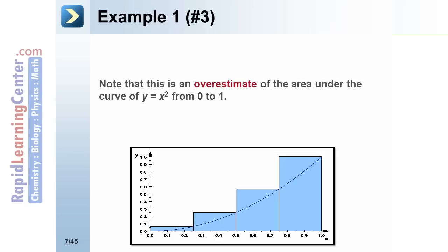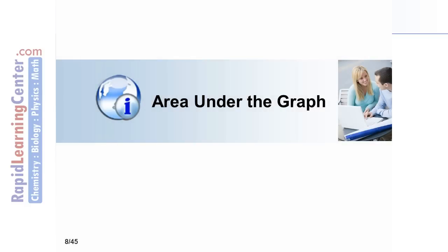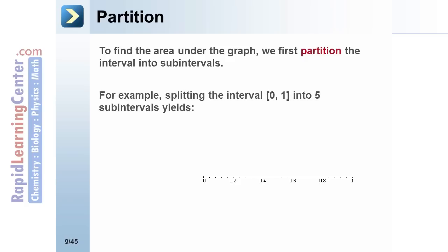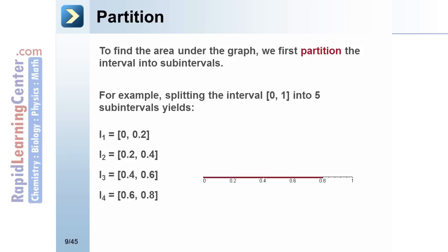To find the area under the graph, we first partition the interval into sub-intervals. For example, splitting the interval [0, 1] into five sub-intervals yields: interval 1 equals [0, 0.2], interval 2 equals [0.2, 0.4], interval 3 equals [0.4, 0.6], interval 4 equals [0.6, 0.8], and interval 5 equals [0.8, 1].